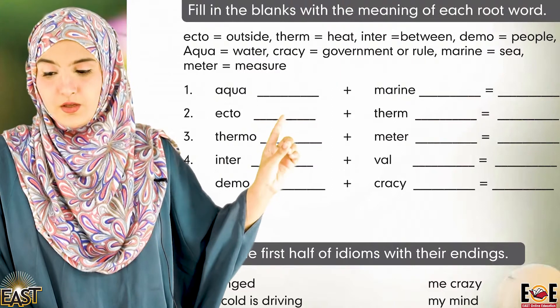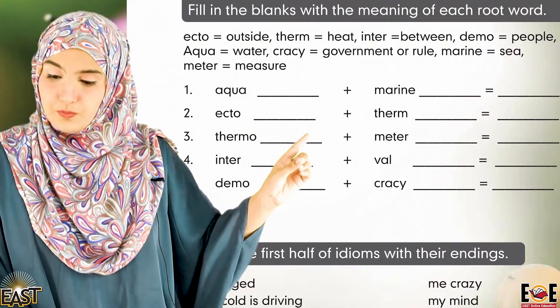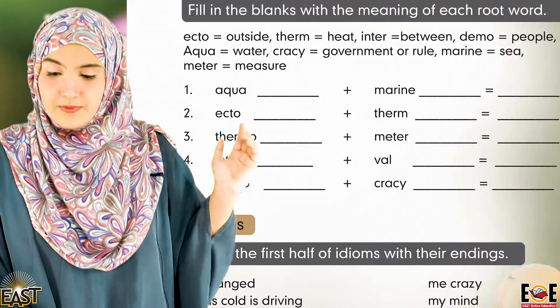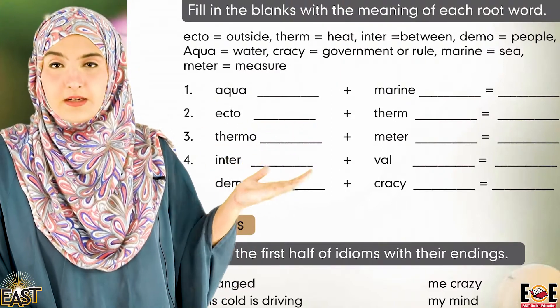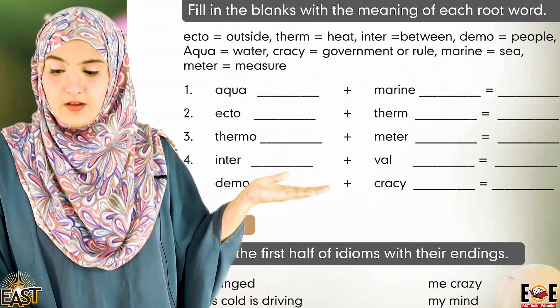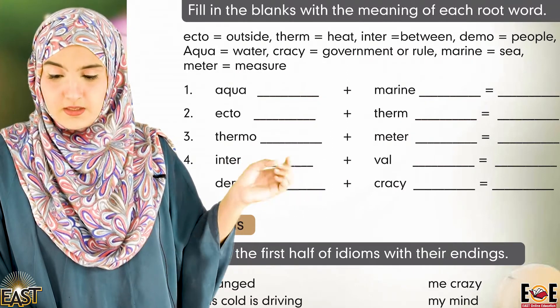This is a very interesting chapter; I really like it. So let's get started. Page number 98, question number one: Grammar — Root Words. Fill in the blanks with the meaning of each root word. Basically I'll have to solve this exercise.